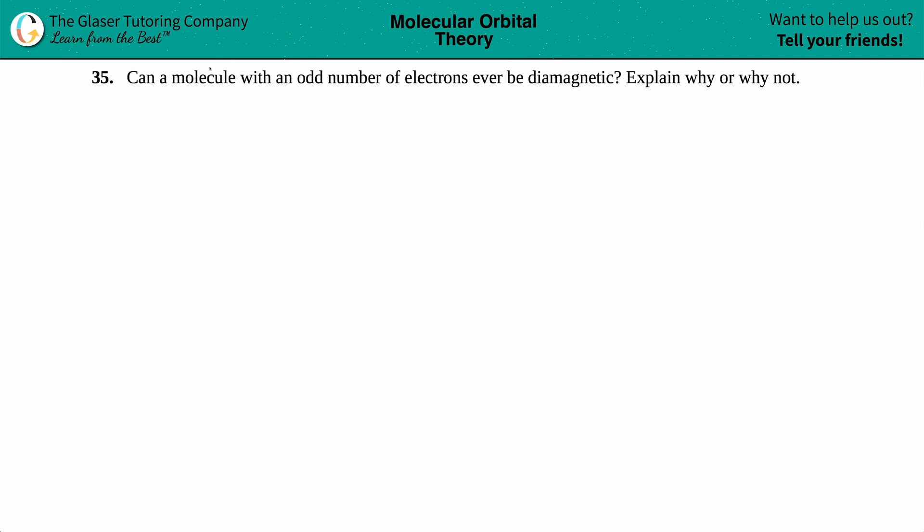Number 35. Can a molecule with an odd number of electrons ever be diamagnetic? Explain why or why not.